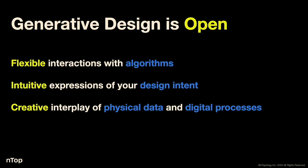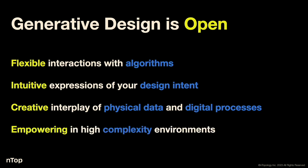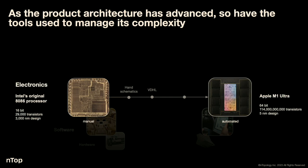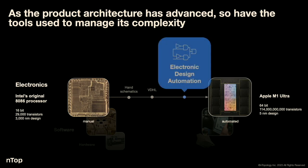Generative design itself is not new. In electronics, for example, if you look at Intel's original processor — 16-bit, 29,000 transistors — it was mostly done with hand schematics. But in order for product architecture to advance, electronics needed new tools to manage the complexity that's possible. A typical chip today — Apple M1 Ultra, 64-bit, 114 billion transistors in a 5-nanometer design. The enabling factor is software: electronic design automation separates the logical from the physical so you can abstract your design process into something the computer can help make.